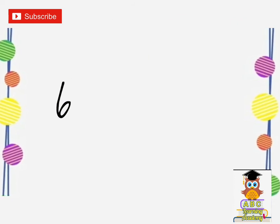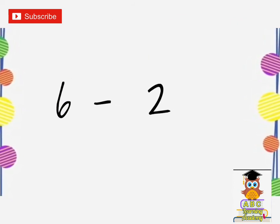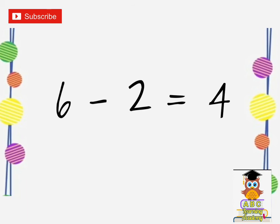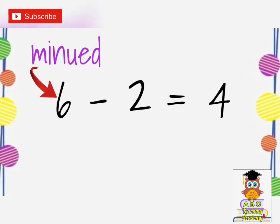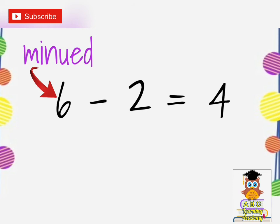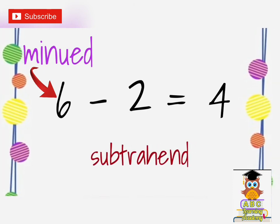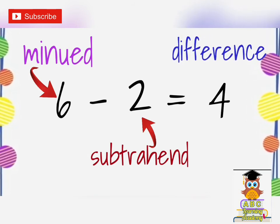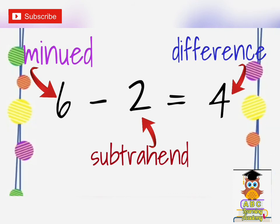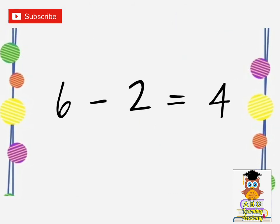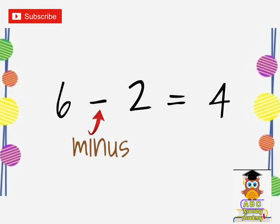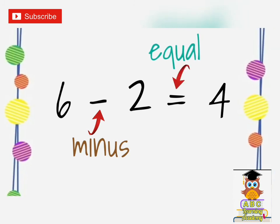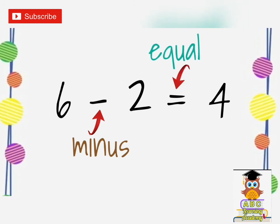Now, this is the example of a subtraction sentence that is written horizontally: 6 minus 2 equals 4. The first number is your minuend — that is the number 6. The second number, that is the subtrahend, the number 2. And then the answer in subtraction is the difference. Don't forget also that the minus sign is there — it is only one line. And then you have the two lines, which is your equal sign.